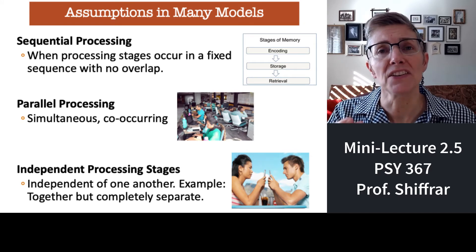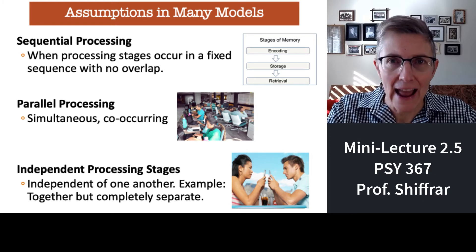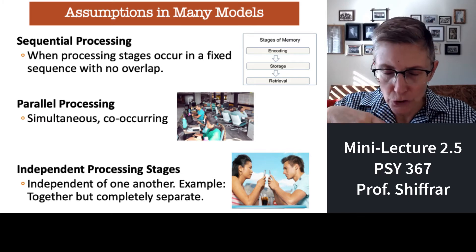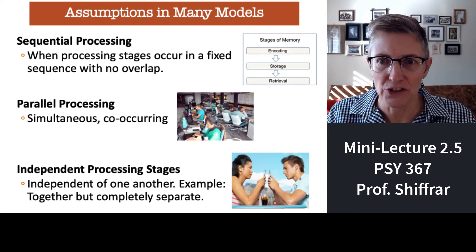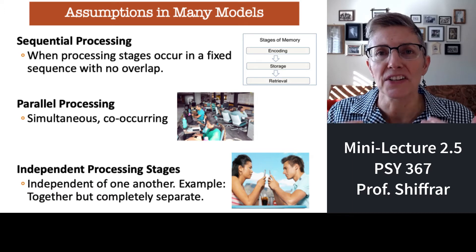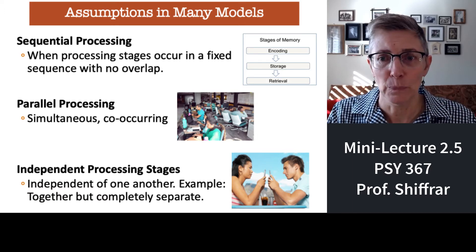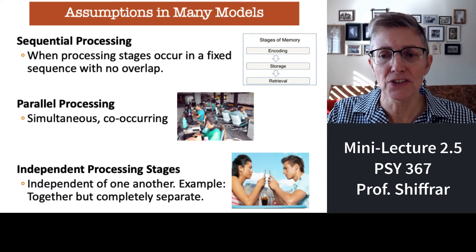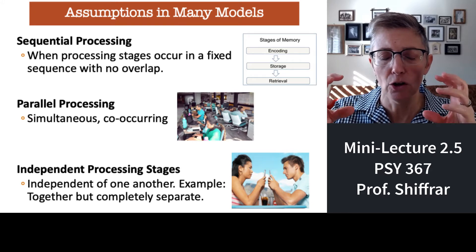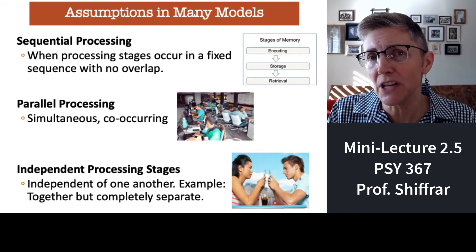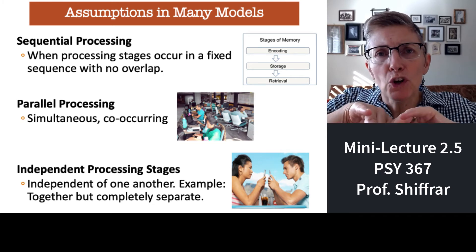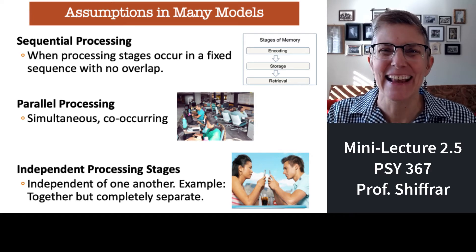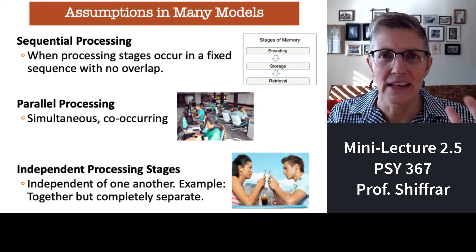There are also different assumptions models make about how information is processed. Sequential processing means one thing happens after another — first you encode, then you store, then you retrieve. Parallel processing means things happen simultaneously. Independent processes may work at the same time but work independently of one another — what one process does is independent of what the other process does.